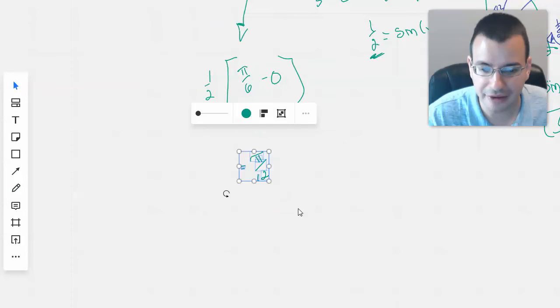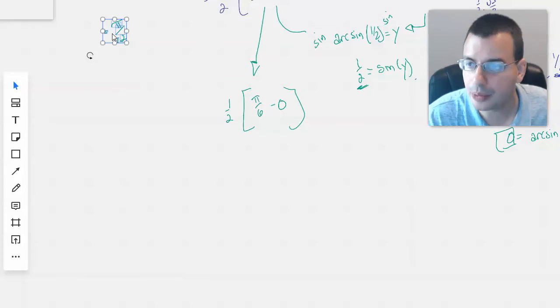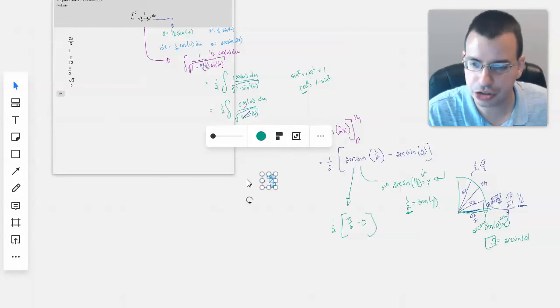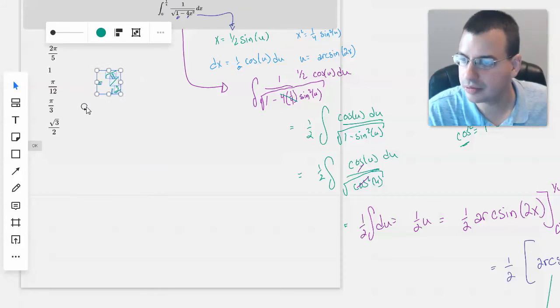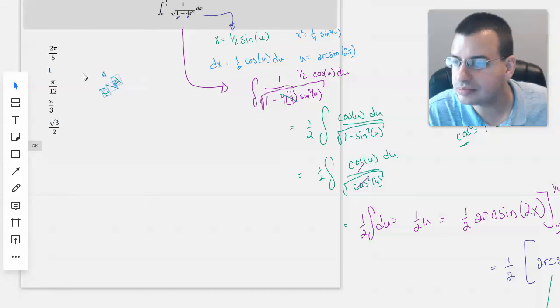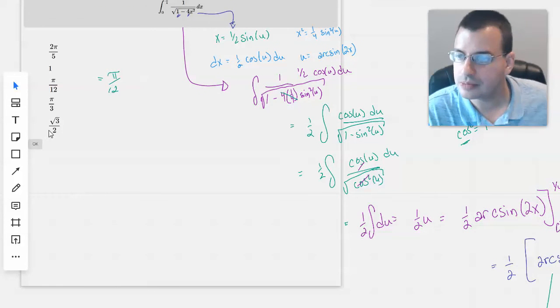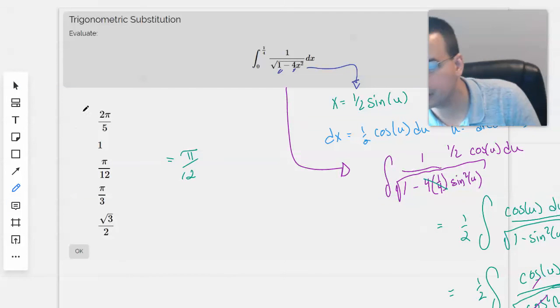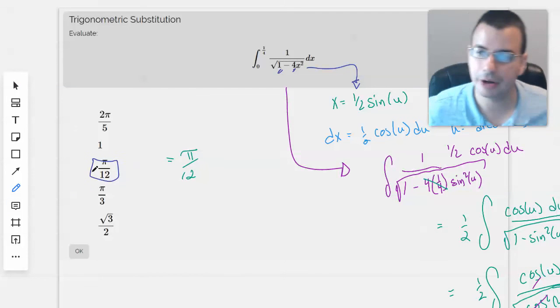And then our final answer will be pi over 12, because one half times pi over 6. Wow, look at that. That was a long, treacherous journey. Quite the odyssey. There we go. Pi over 12, right here. There we go. Okay.